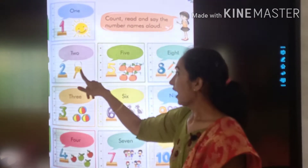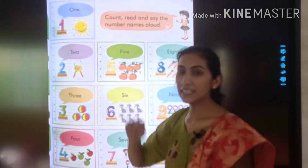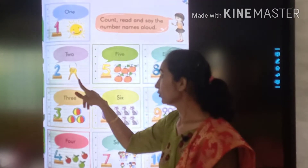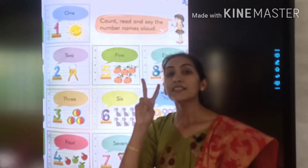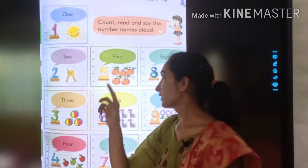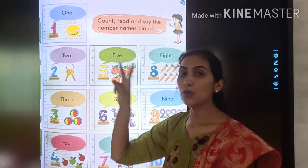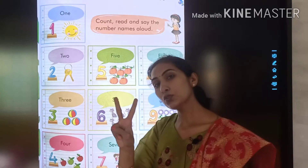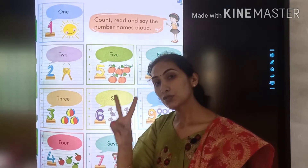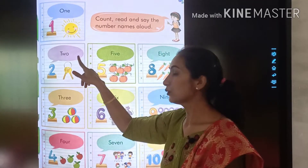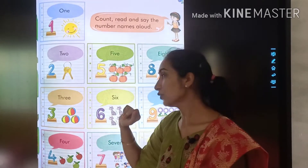How many keys are there? 1, 2. There are 2 keys. T-W-O, 2. 2 keys.